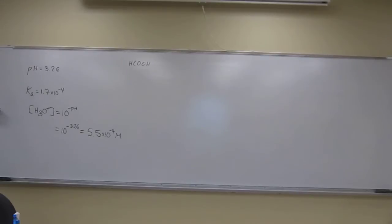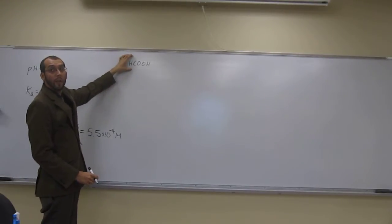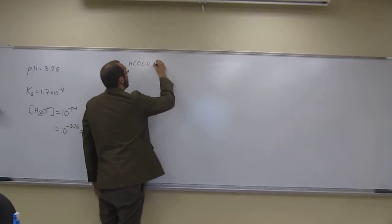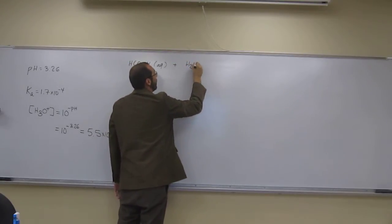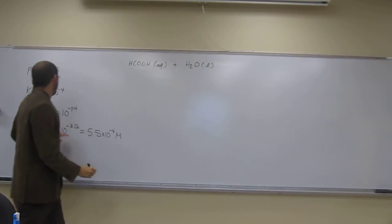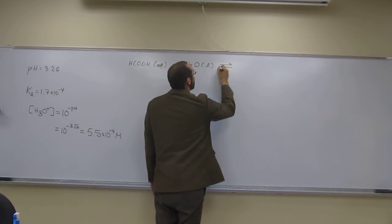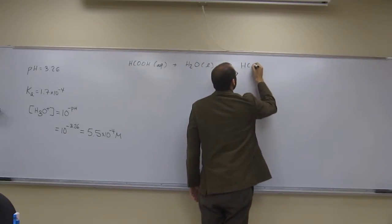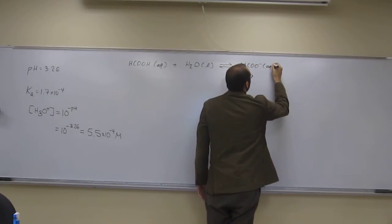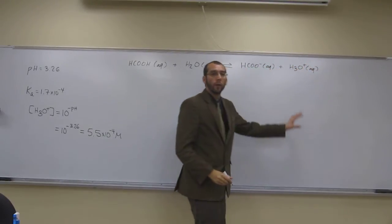Now we need to figure out where this fits in. This acid has to react with a base, and the base it's going to react with is water. So we're going to have this equilibrium reaction: the acid reacting with water gives us our conjugate base, the formate anion HCOO⁻, plus the conjugate acid H₃O⁺, which is the quantity we're looking for.